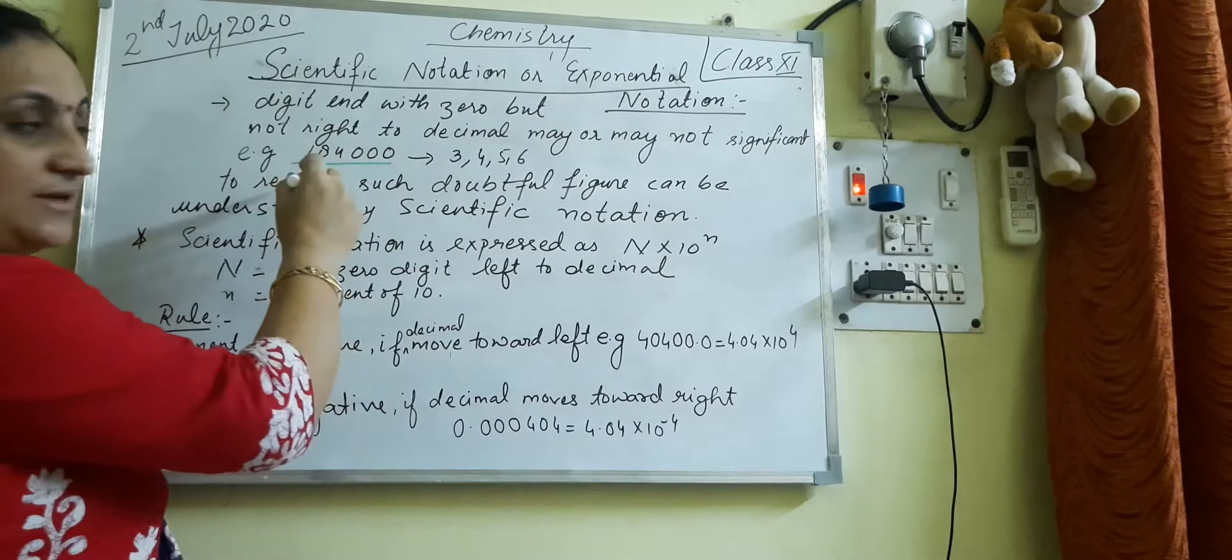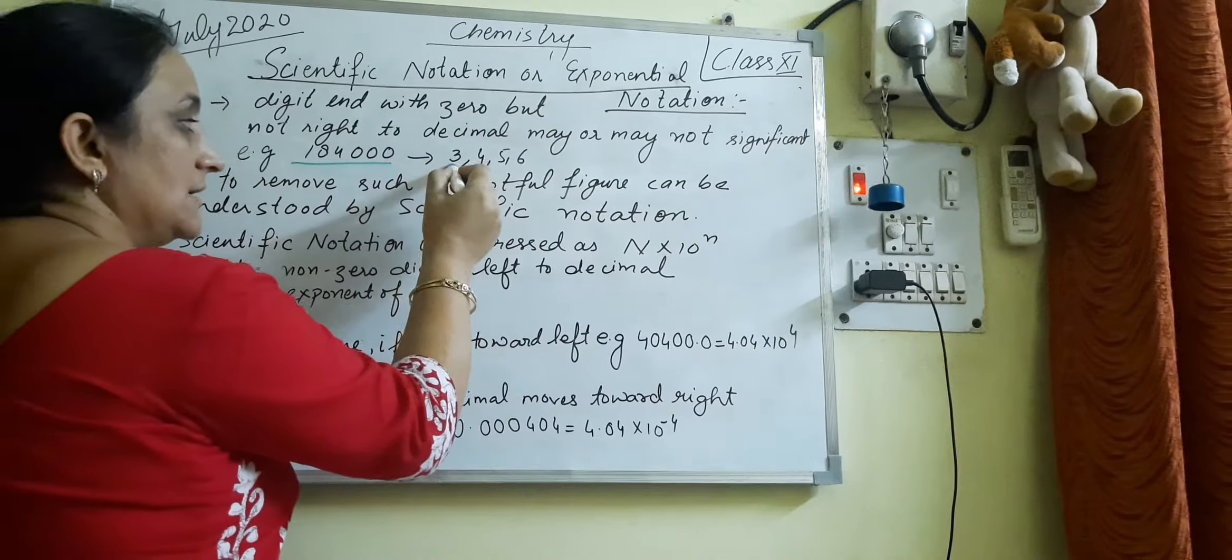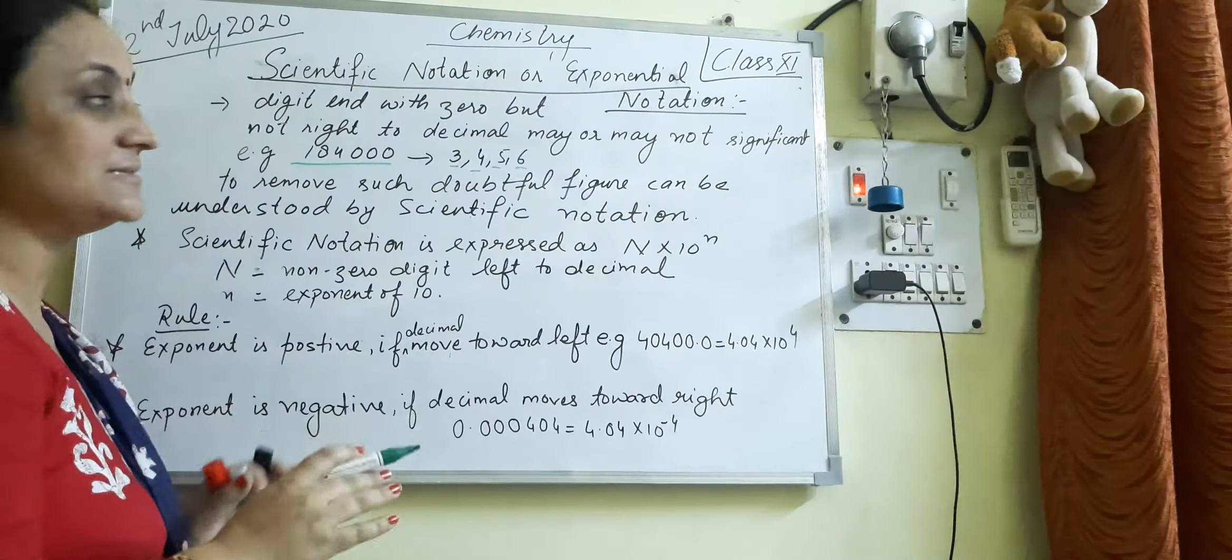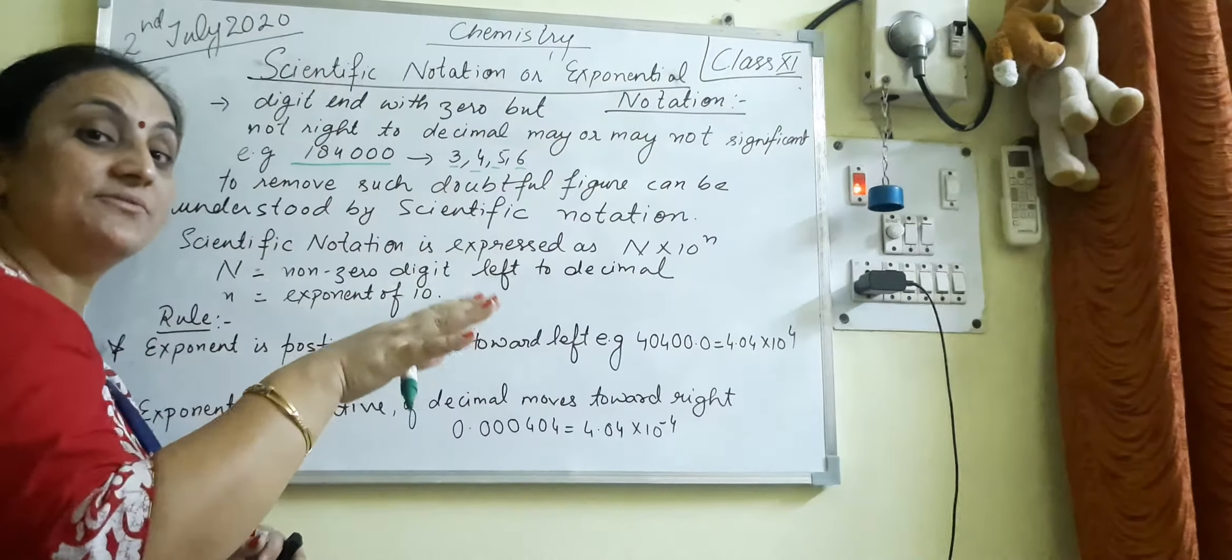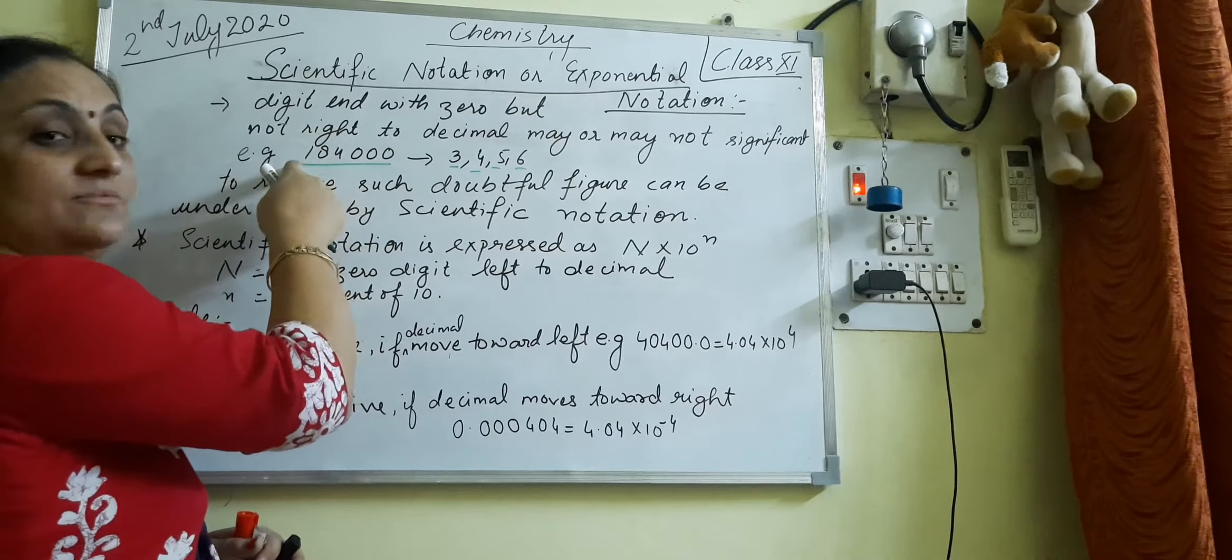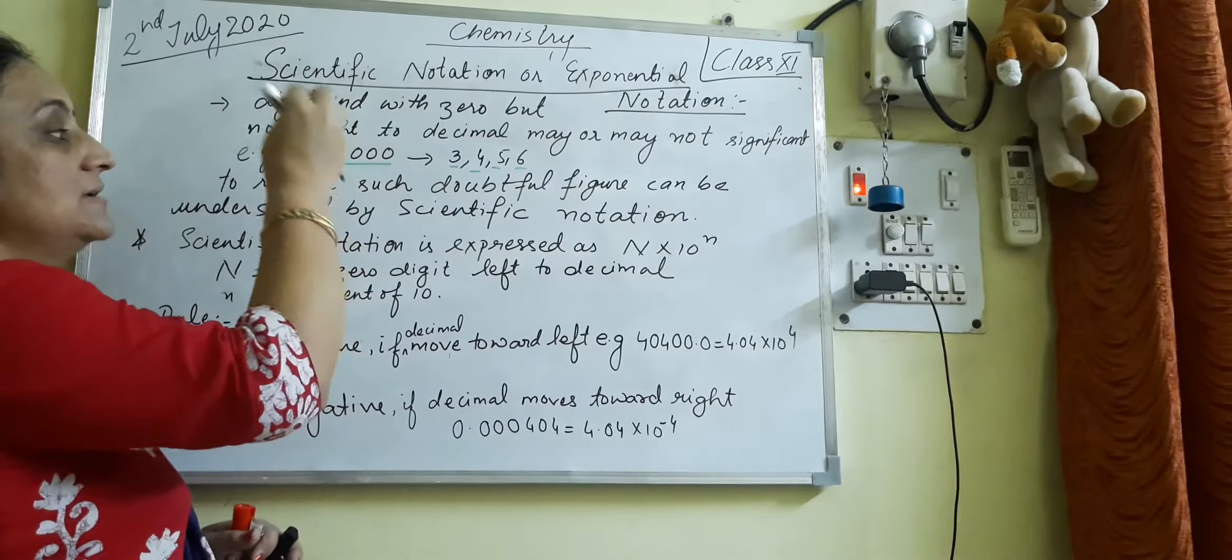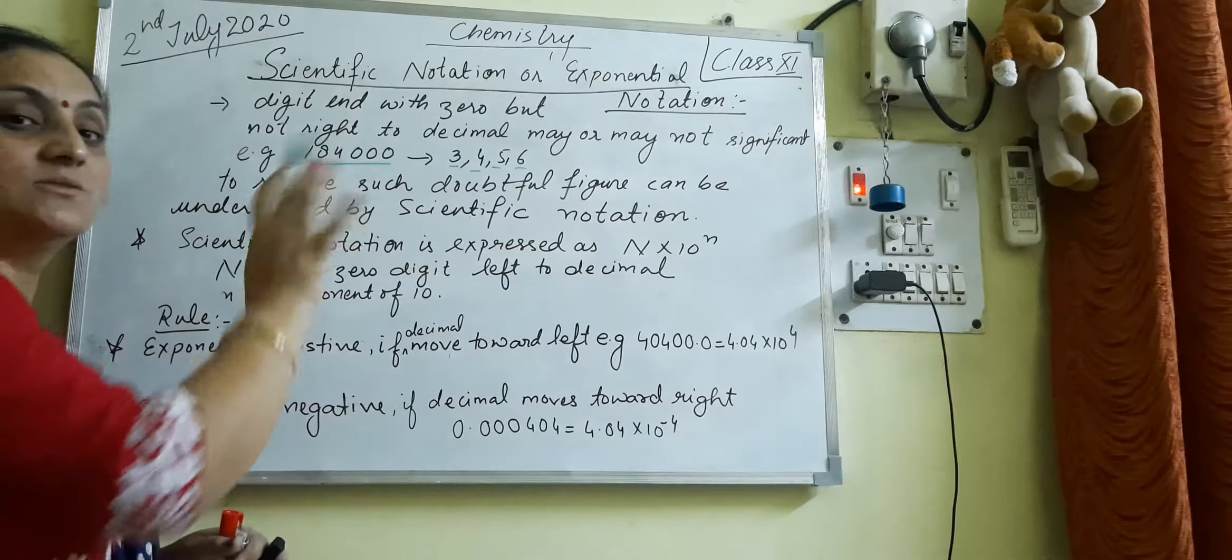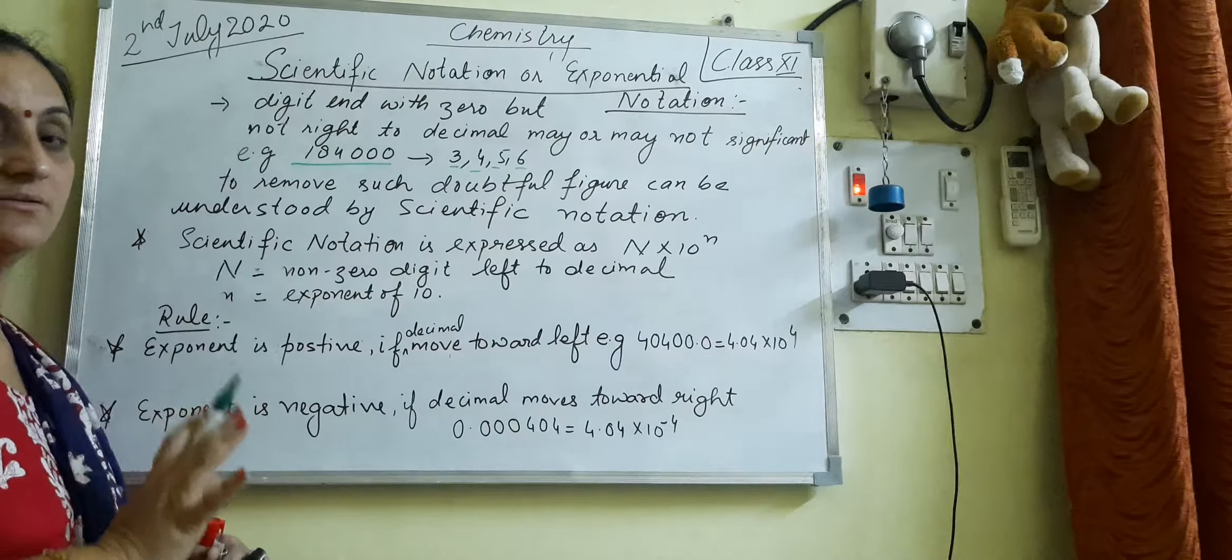For example, this is the number 18400. So this figure could have three significant figures, four, five, or six. We can't say definitively whether this figure has three, four, five, or six significant figures because there is no decimal between them.